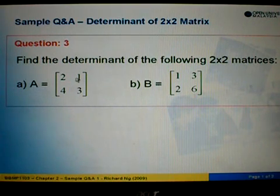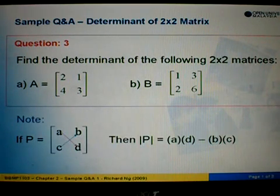We are given the matrix A = [[2,1],[4,3]] and B = [[1,3],[2,6]]. Now, in order to find the determinant, say for example P = [[a,b],[c,d]], what we need to do is cross-multiply.